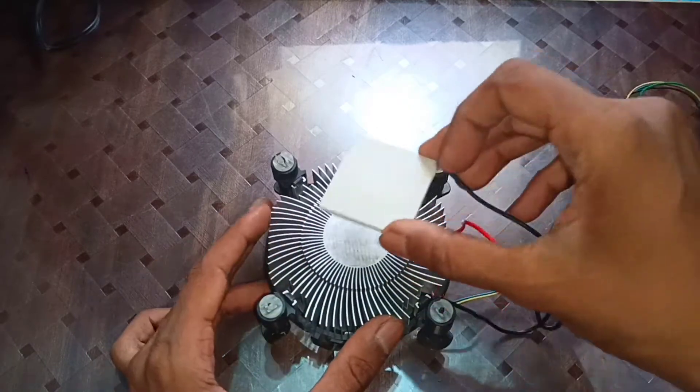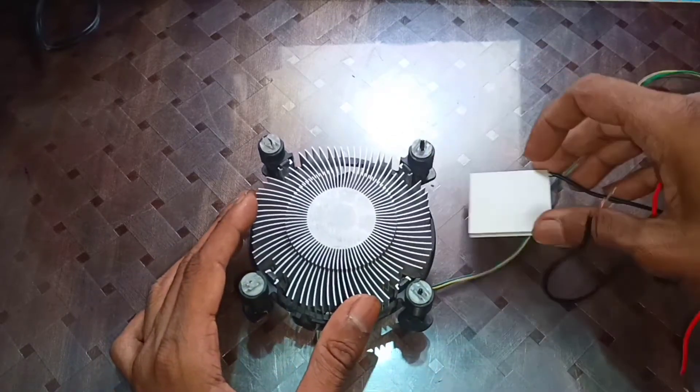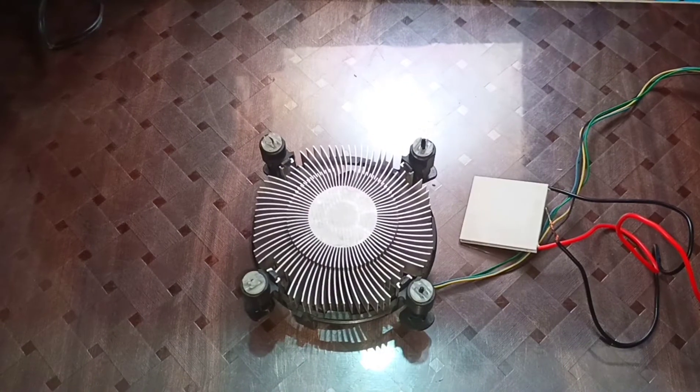Then we have the hot area which is warm with the Peltier module. You can attach it with the heat sink.